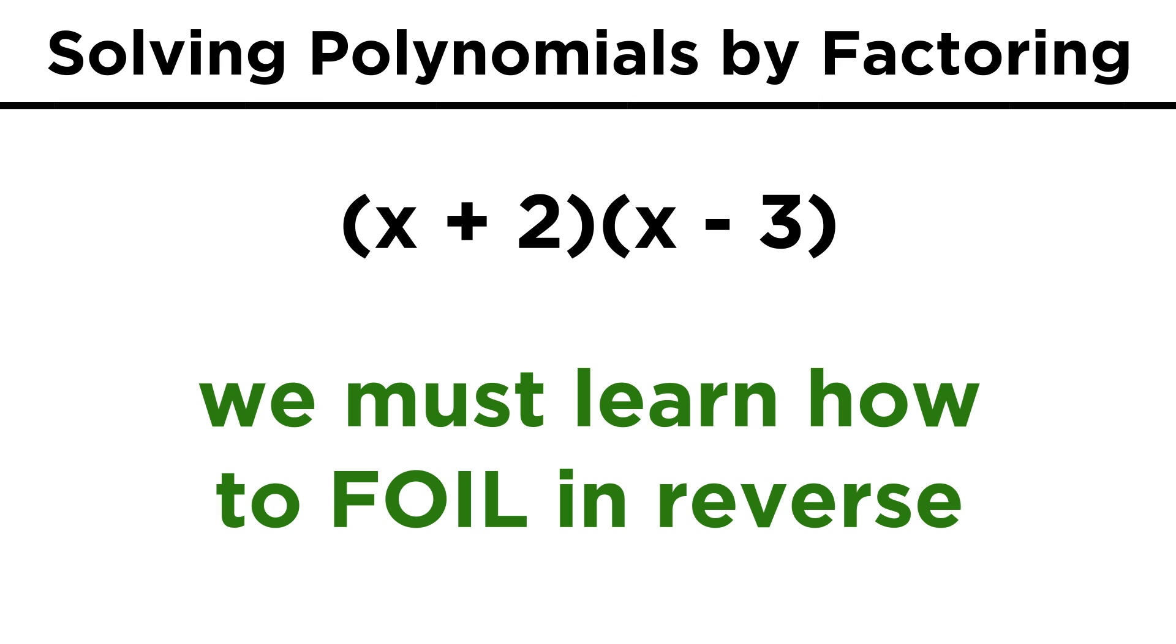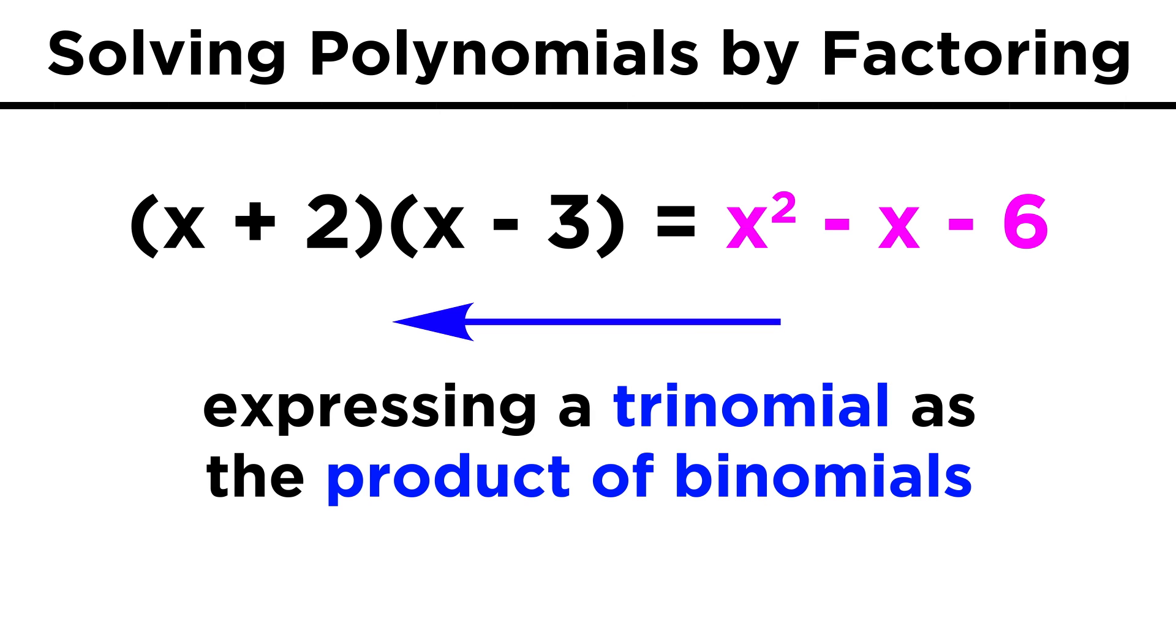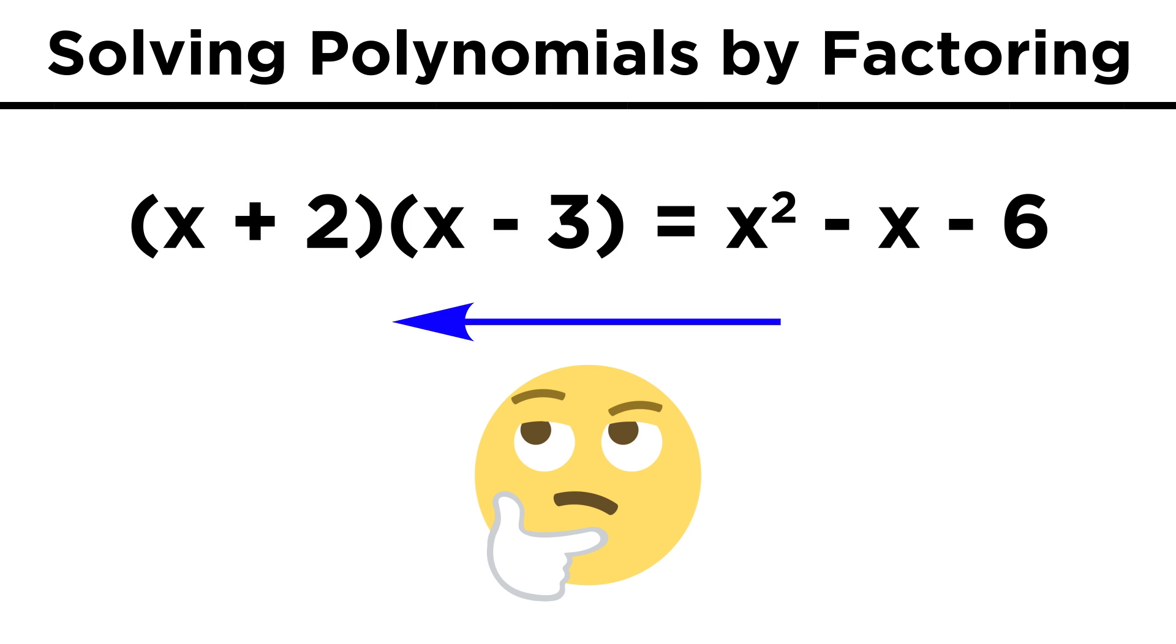The first technique we will use to solve some simple trinomials will be the reverse of the FOIL method we just learned, in that foiling two binomials gives us a trinomial, whereas we will now take a trinomial and express it as the product of two binomials. To do this, we have to be a little clever and think backwards.